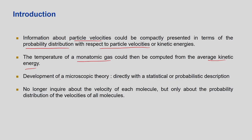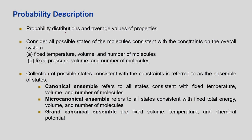Our aim is to develop a microscopic theory directly linked with a statistical or probabilistic description. We no longer inquire about the velocity of each molecule — only about the probability distribution. When we talk of probability distribution, we talk about average values. If we can specify a probability distribution, we can then predict average values.